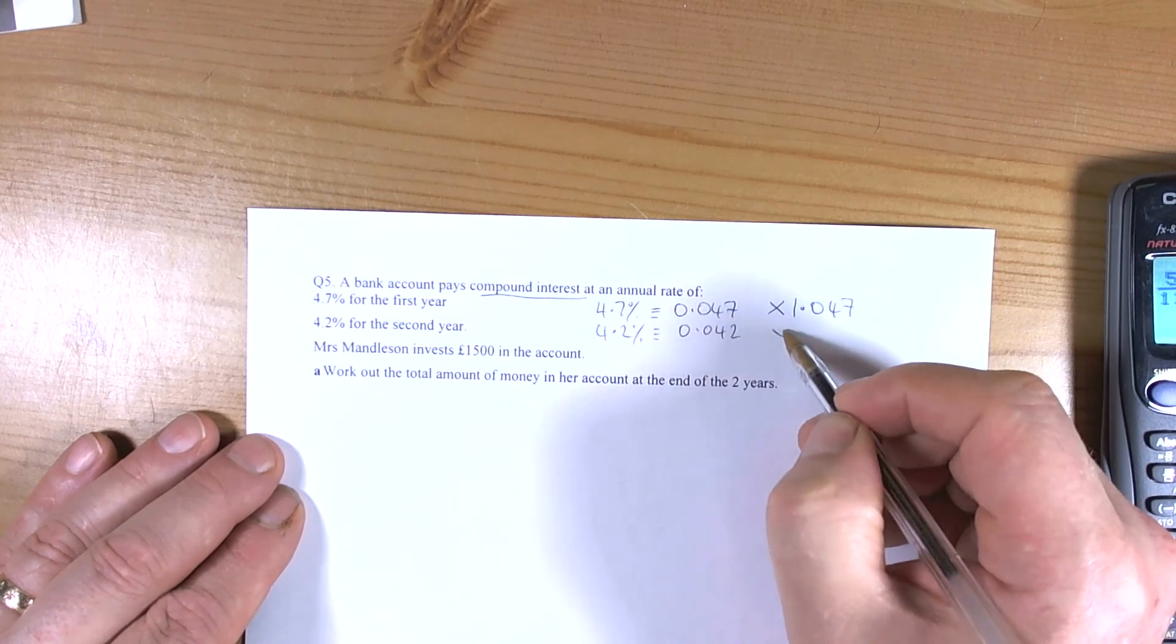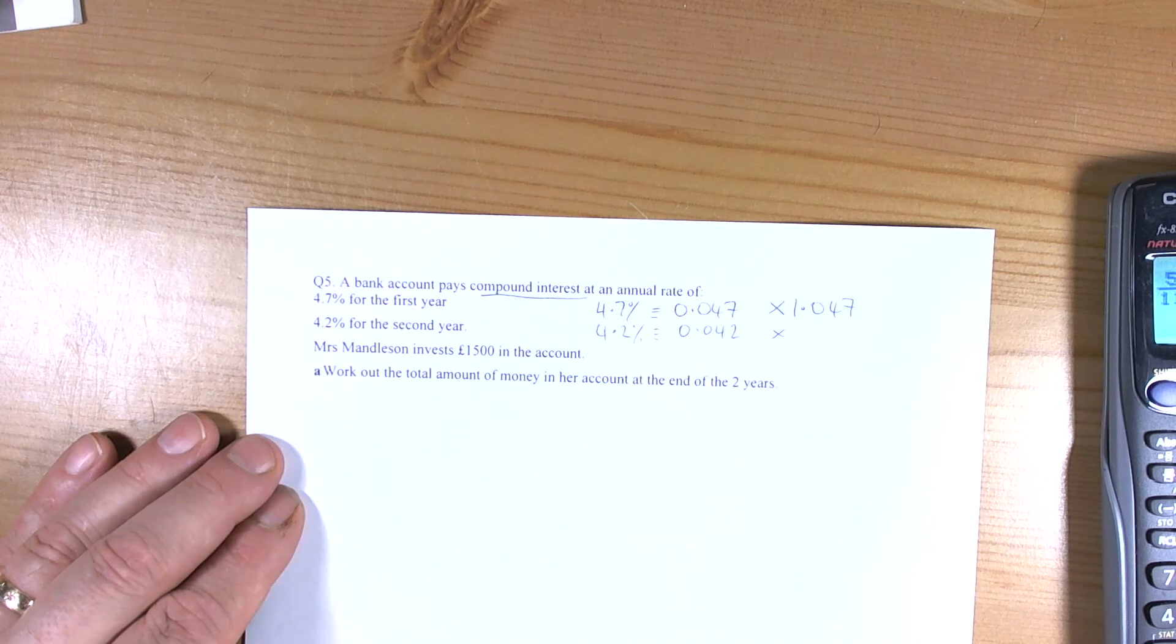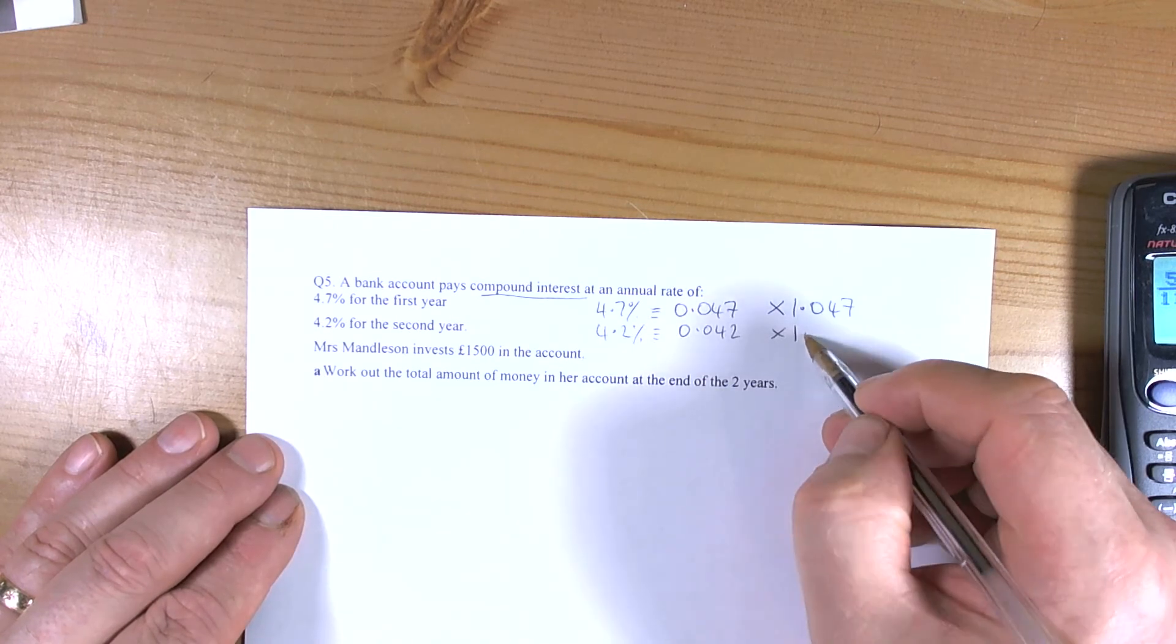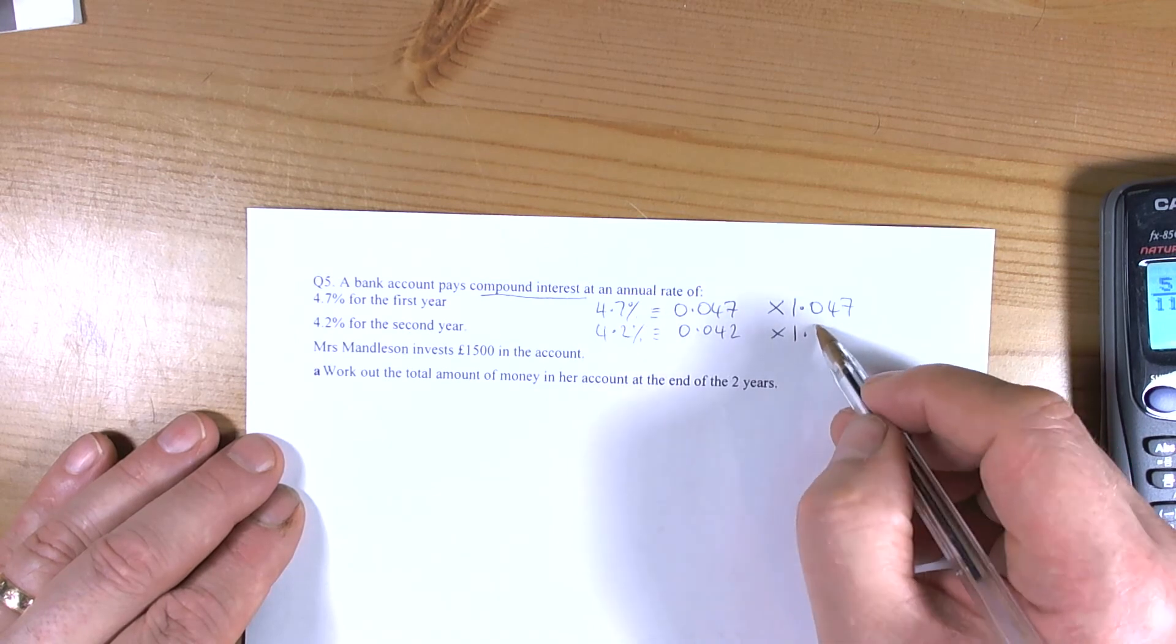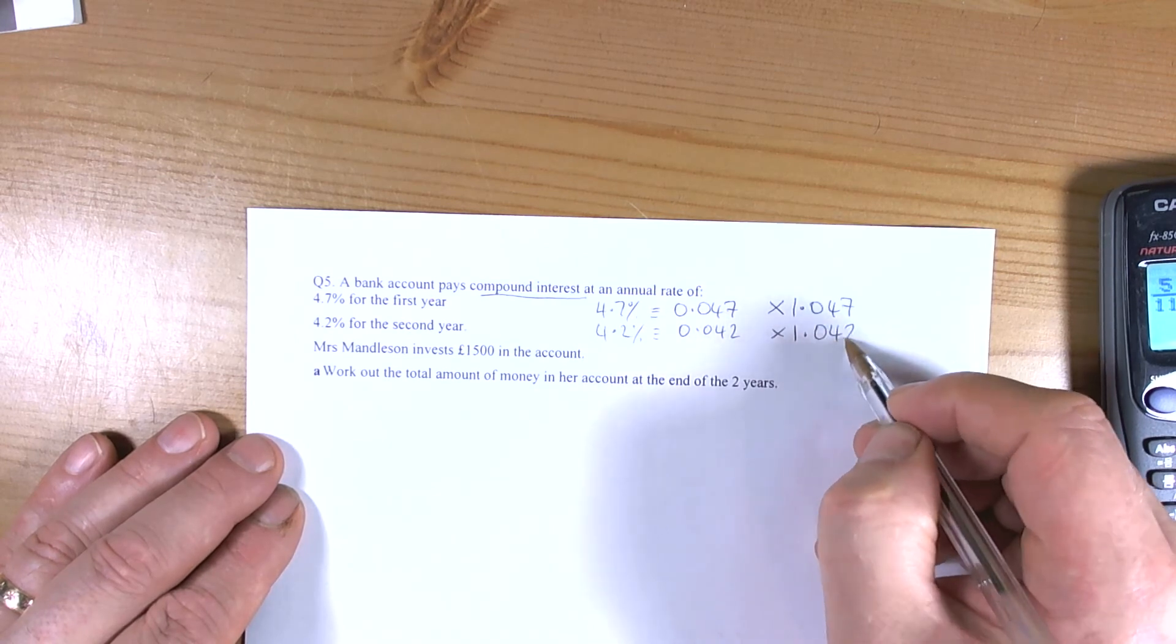When we're talking about an increasing situation, then we add it to 1 for the original 100%, which will be what was at the end of the first year. Then this is going to be 1.047.